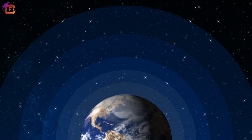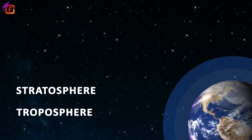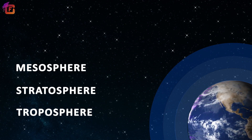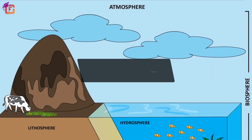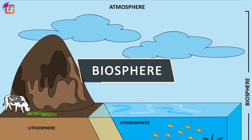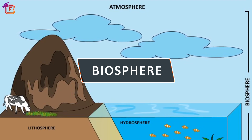Hello learners, welcome to the video. In the previous chapter we learned about the layers of the atmosphere. Our atmosphere is divided into five main layers based on temperature difference. Can you name them? Yes, they are troposphere, stratosphere, mesosphere, thermosphere, and exosphere.